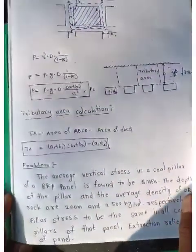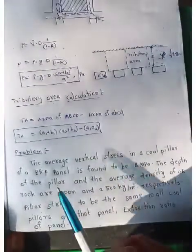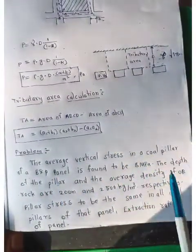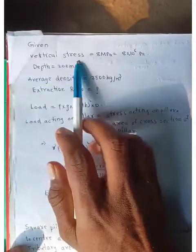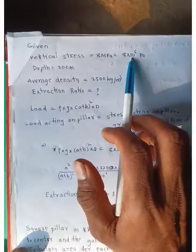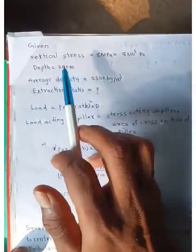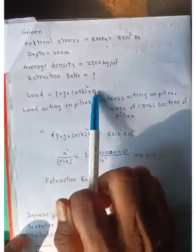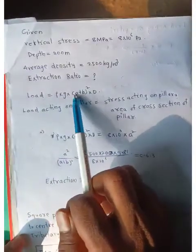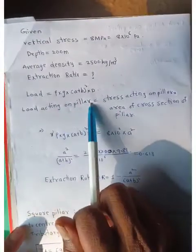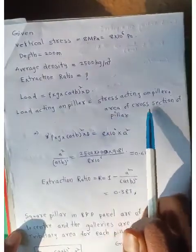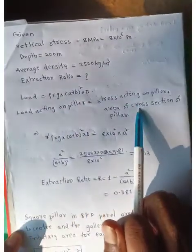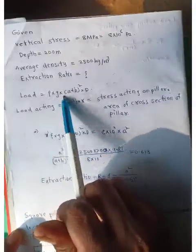Now let's move on to the first question related to load acting on pillar. Given data: vertical stress = 8 MPa (8 × 10⁶ Pa), depth = 200 meters, average density is given, and we need to find the extraction ratio. The load acting on pillar equals rho × g × (a + b)² × d. Also, load acting on pillar equals stress × area of cross-section of the pillar, since stress = load / area.